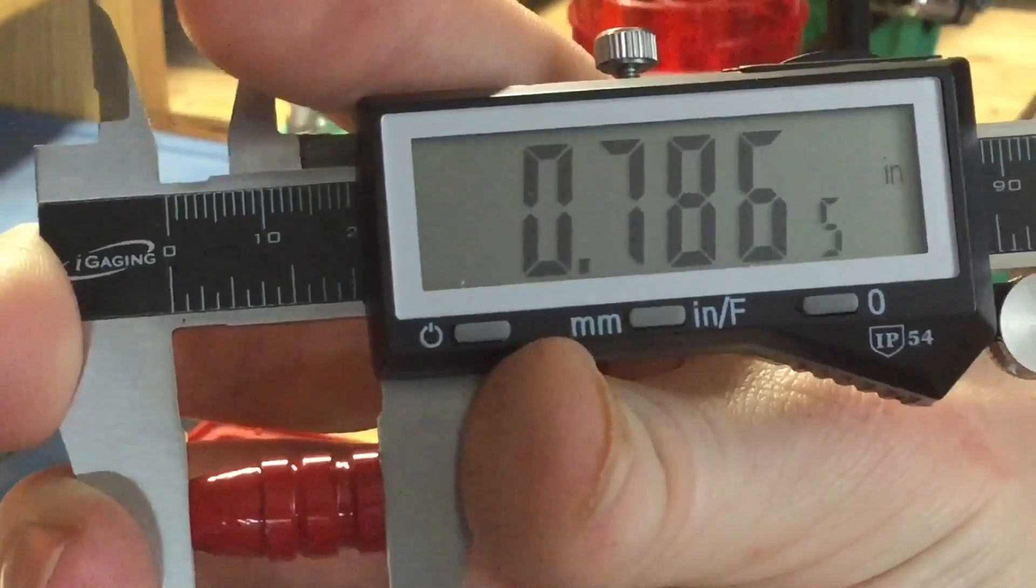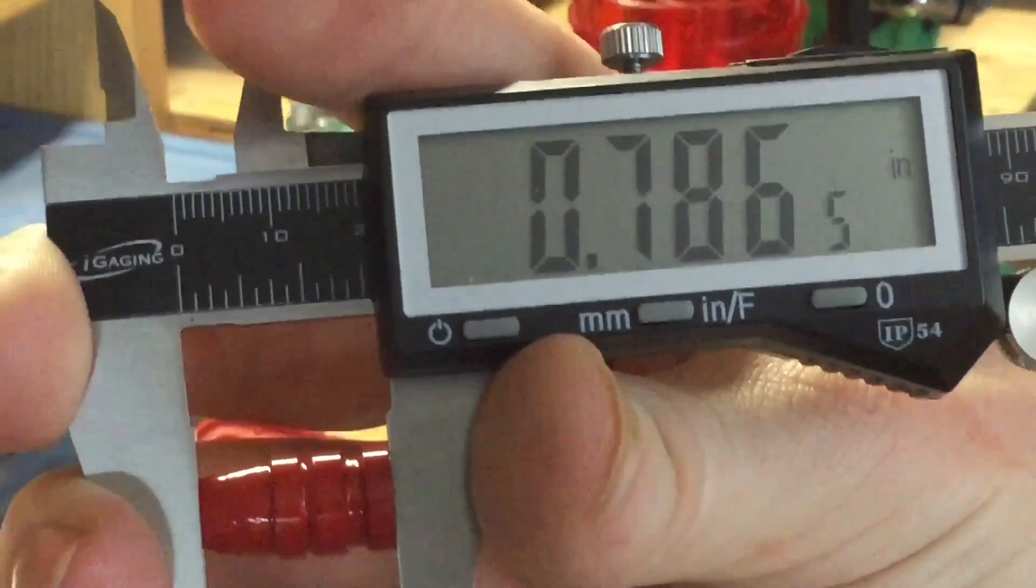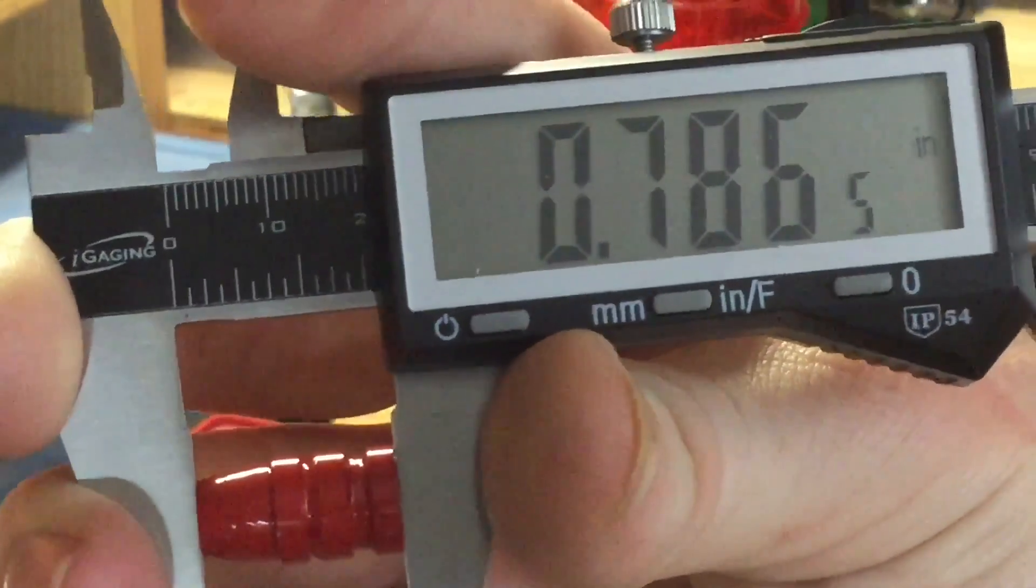And here you can see the final length. That was 0.7735, and now it's 0.7865. So while the diameter has decreased a hair, the length has extended a hair.